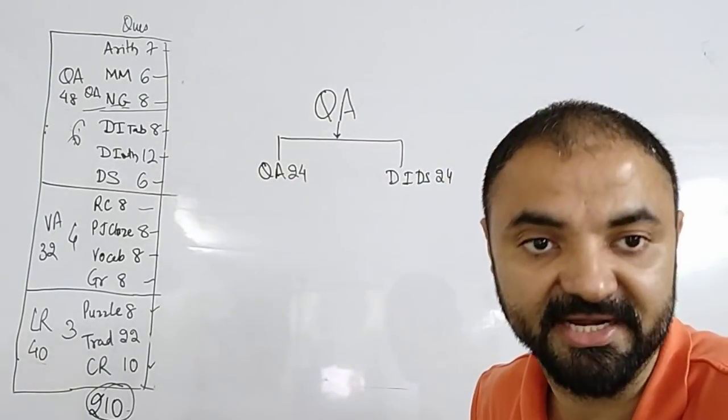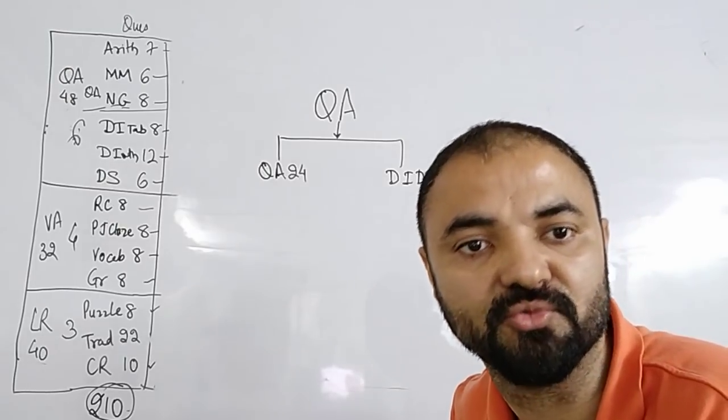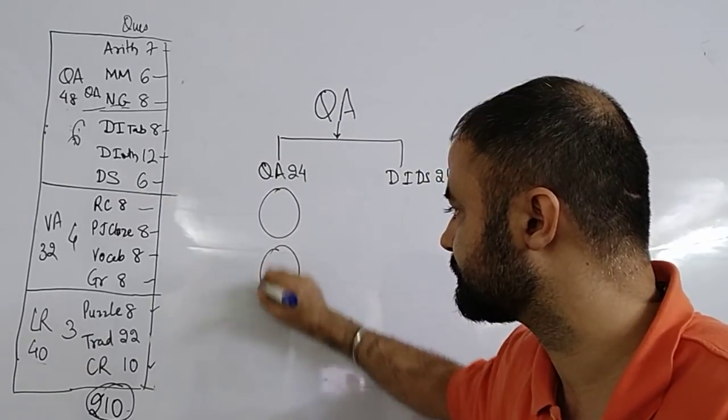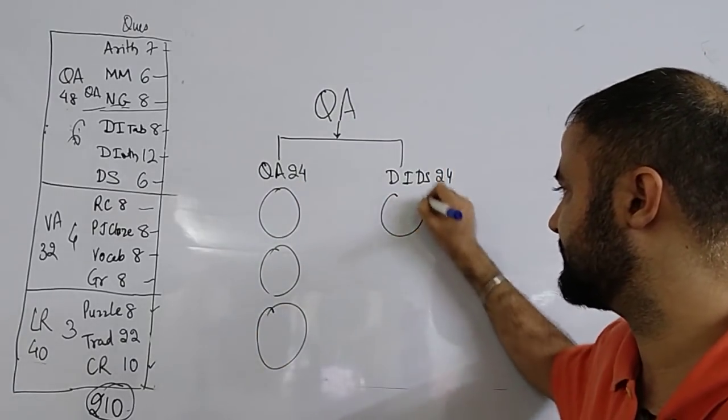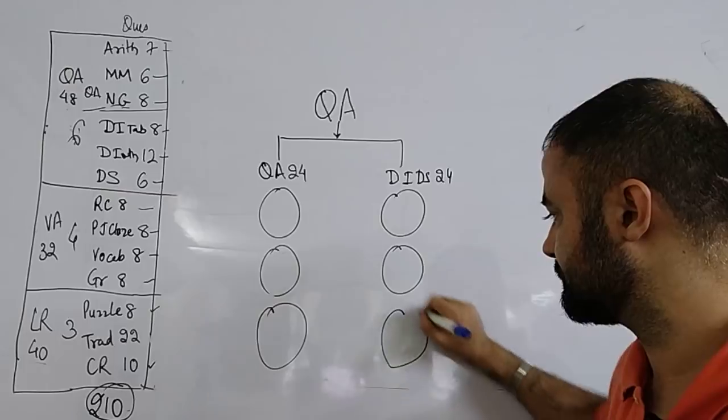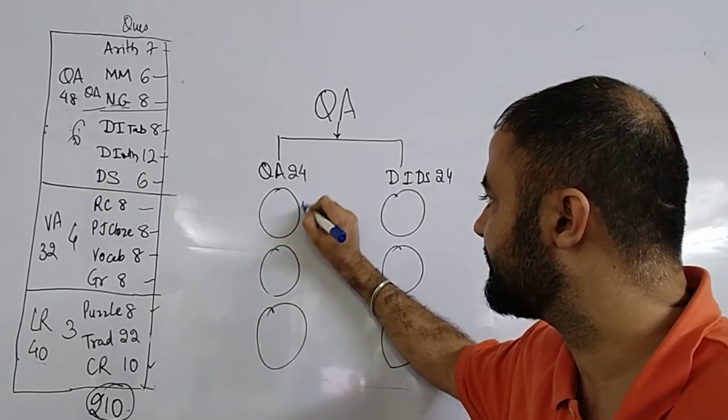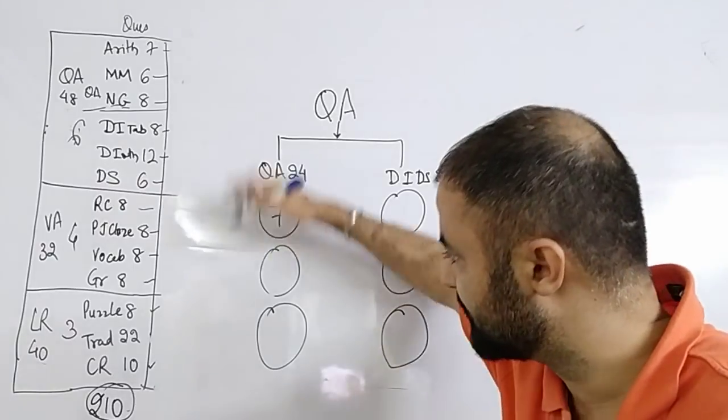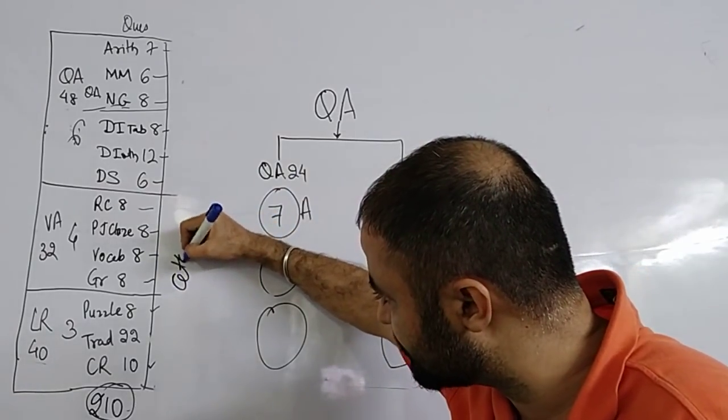DI/DS is not that easy in an average paper, but still if you're not able to do quant, you can focus on that. But why leave quant? There are 3 sections within quant and 3 sections within DI/DS. Arithmetic has 7 questions covering percentages, profit and loss, and these details are given on ctking.com/NMAT.